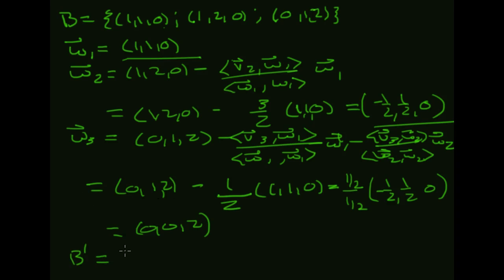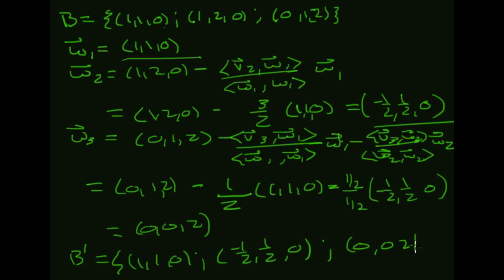So B prime — which is (1, 1, 0), (−1/2, 1/2, 0), and (0, 0, 2) — is now an orthogonal basis for R3. So I've gone from having a basis for R3 to an orthogonal basis.